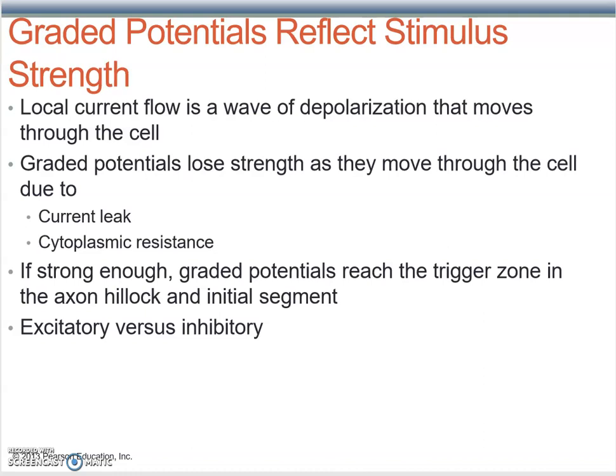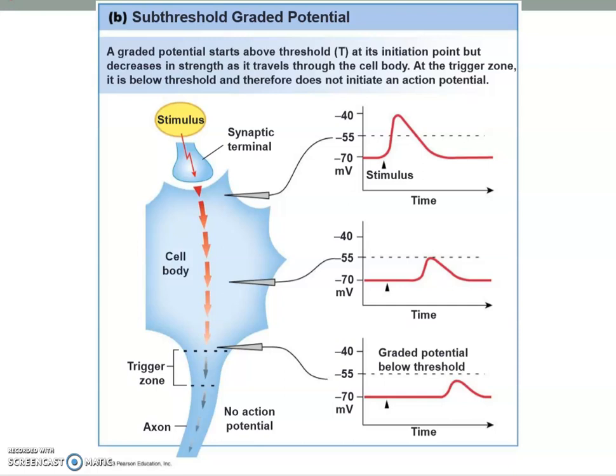Graded potentials can be excitatory or inhibitory. If they're excitatory, they're bringing the membrane closer to a threshold for an action potential, making it more likely to get one. Or they could be inhibitory — going into hyperpolarization, making it less likely to get an action potential. For example, a graded potential may be fairly large when starting out, but it decays over the distance as it travels through the cell body. By the time it arrives at the axon hillock where the trigger zone is, it's not strong enough to generate an action potential.